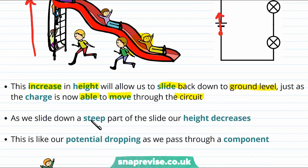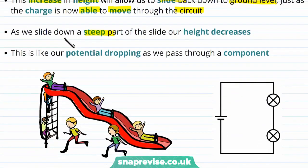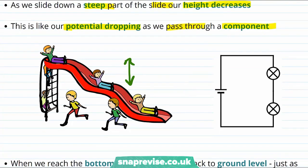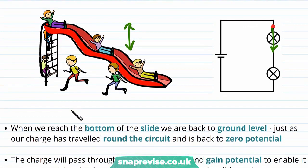Now as we slide down a steep part of the slide our height is going to decrease. And remember in this analogy the height represents the potential. So here is our first decrease in height. This is just like the potential dropping as we pass through a component in the circuit. So as the charge moves from here through to the other side of the component, just like the height above ground has decreased, the potential has decreased.